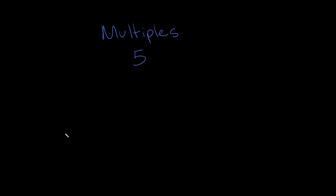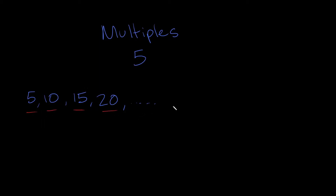Let's say we wanted to find multiples of five. The first way is just by counting by fives. So I could just say 5, 10, 15, 20 — and we can just keep going forever. All these numbers — 5, 10, 15, 20, 25, etc. — are all multiples of five.